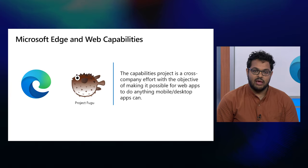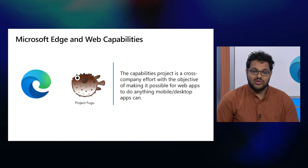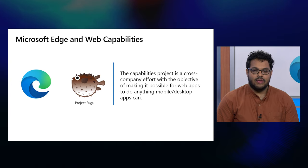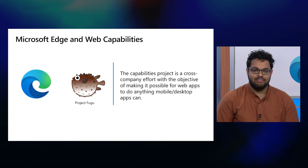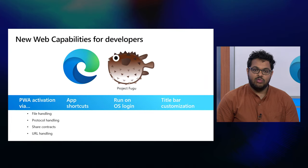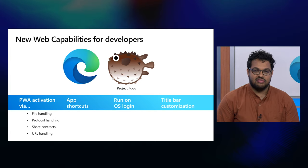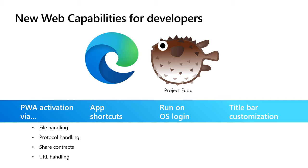That covers some of the improvements we're making so that PWAs shine in Edge and on Windows. The other way we continue to improve PWAs is with the capabilities project, a cross-company effort called Project Fugu, with the goal of enabling web apps to do anything that native apps can do. These powerful capabilities still need to maintain user security, privacy, trust, and other core tenets of the web. We've collaborated upstream in Chromium with Project Fugu to bring new capabilities to your PWA in Microsoft Edge that help close the gap between web apps and native apps.